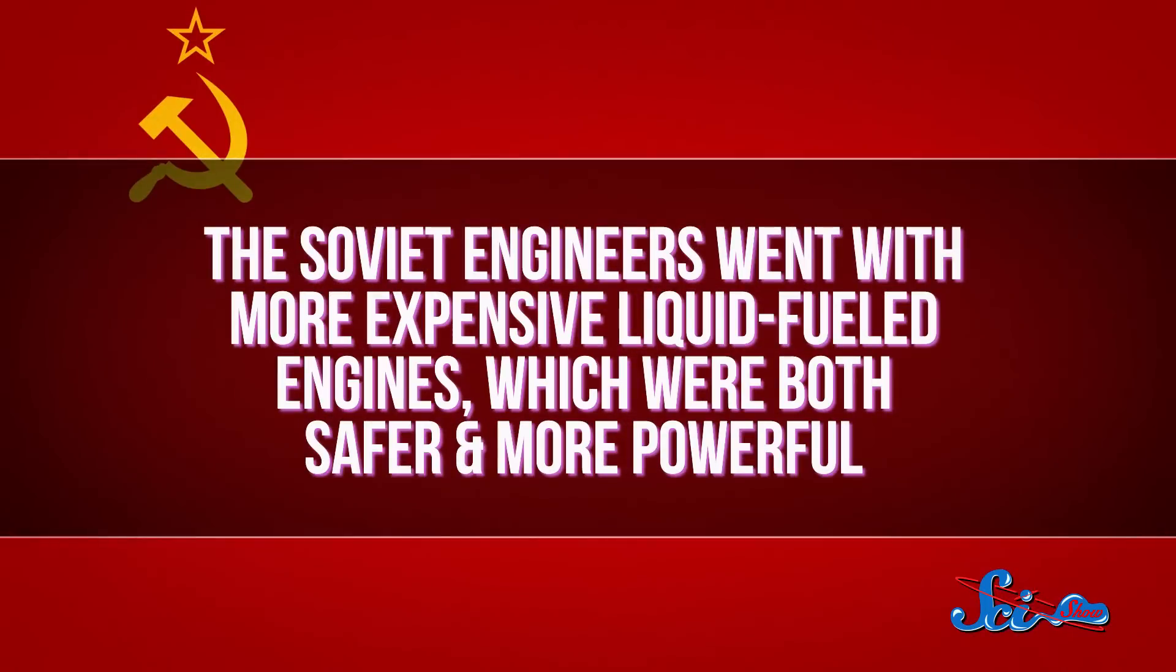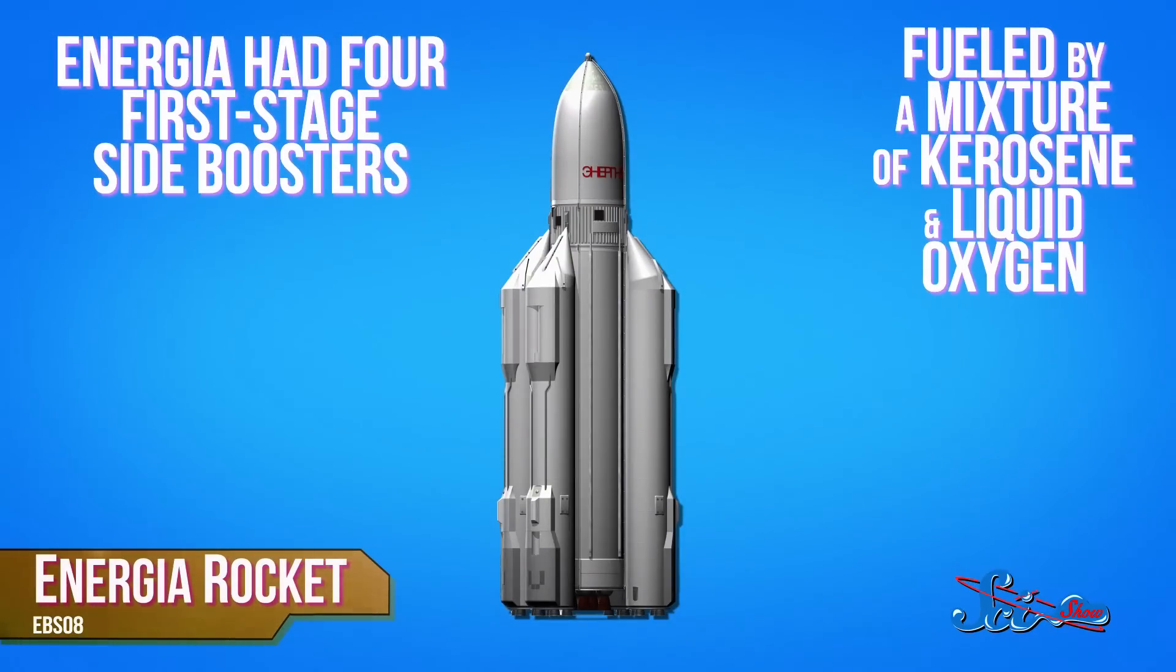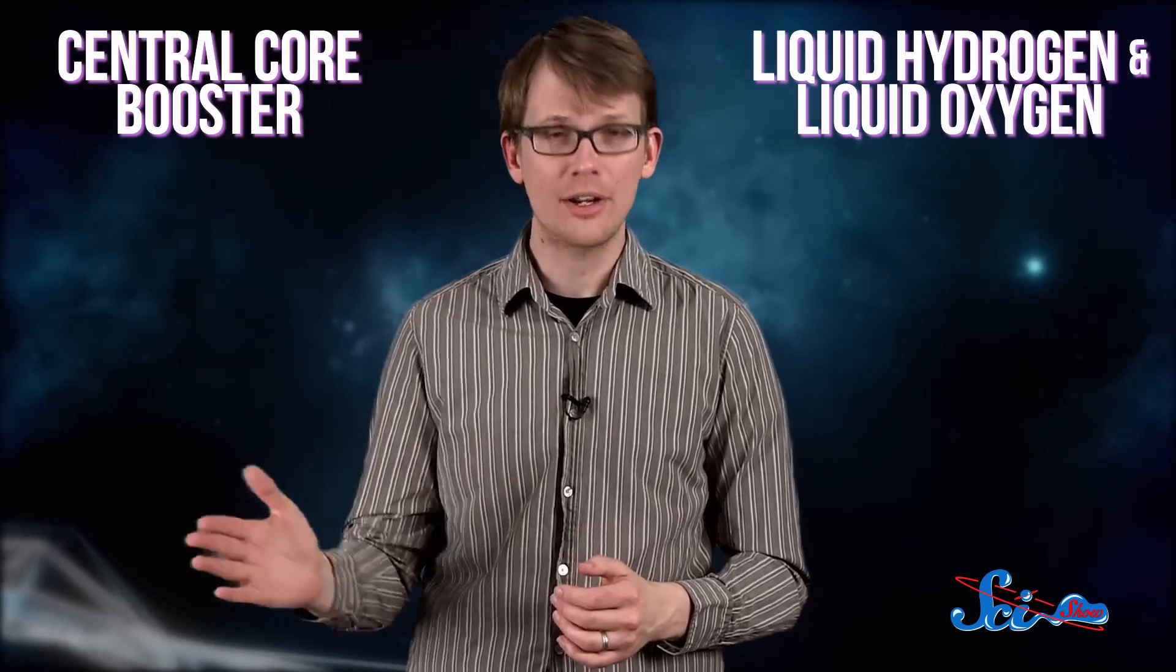So the Soviet engineers went with the more expensive liquid-fueled engines, which were both safer and more powerful. The Energia had four first-stage side boosters, which were fueled by a mix of kerosene and liquid oxygen. Its central core booster was powered by liquid hydrogen and liquid oxygen.